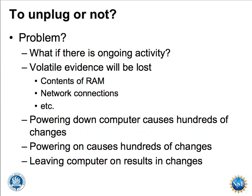What's the problem with pulling the plug? What if there's ongoing activity — a document open on screen, important information in RAM, or important network connections where somebody is downloading or uploading something that is part of the crime scene? If you pull the plug, you lose all that information. That's called volatile evidence — evidence that is changing. The contents of RAM are continually changing, and there are network connections and lots of different types of evidence that could be lost.